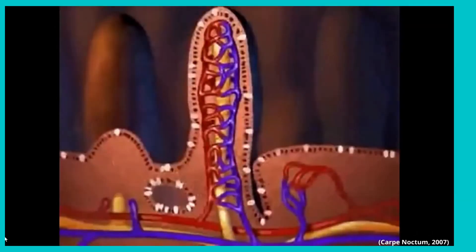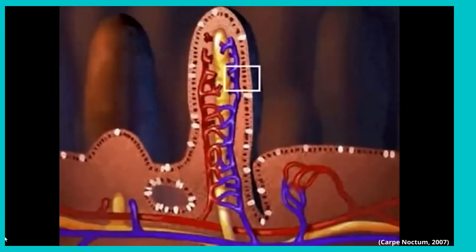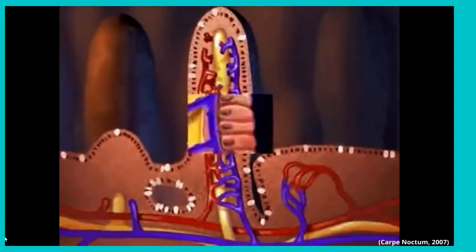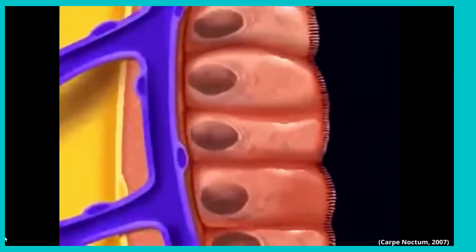The small intestine is made up of folds of villi. Each villus (singular) is made up of capillaries. The lacteal in each villus is a lymphatic capillary that absorbs dietary fats. Enlarging the villus, you see microvilli — tiny hair-like projections that increase nutrient absorption.